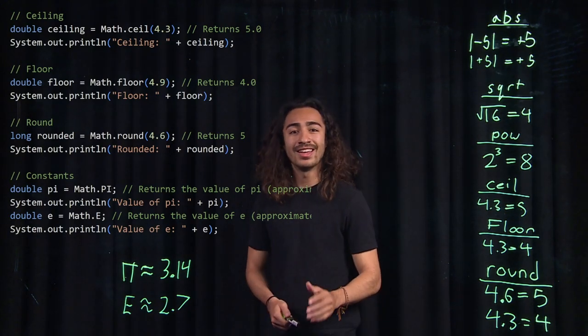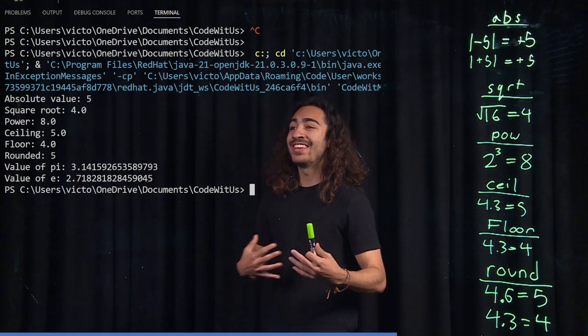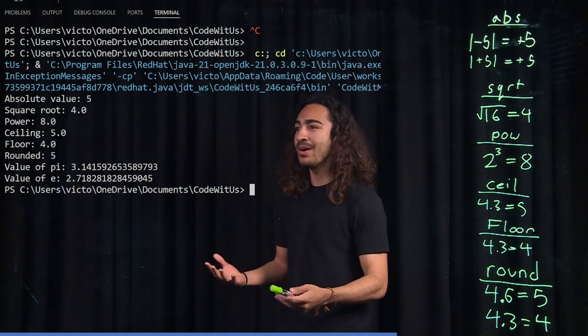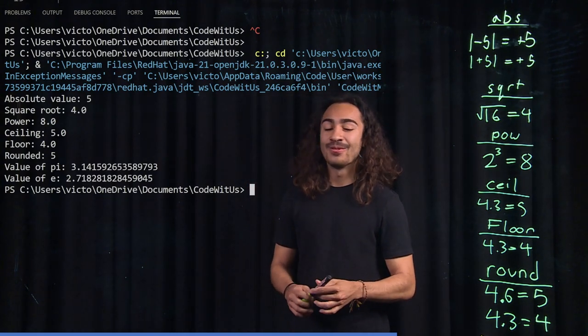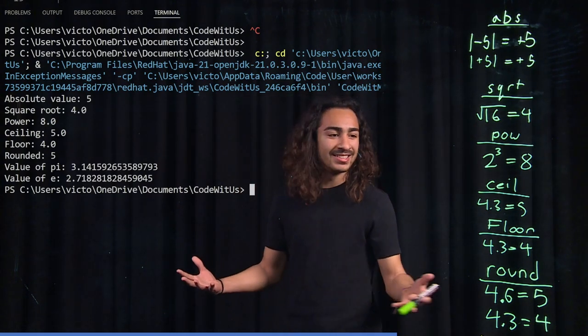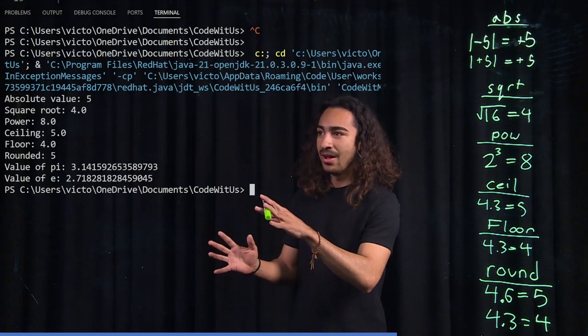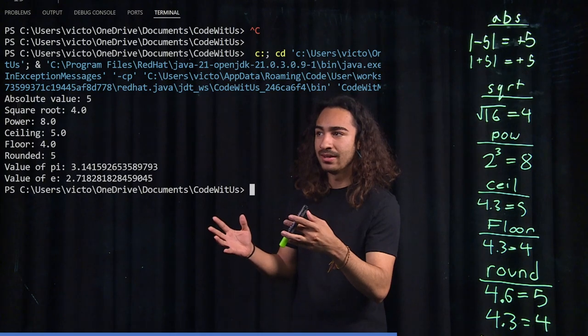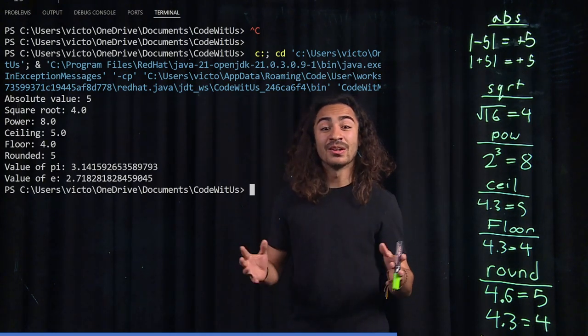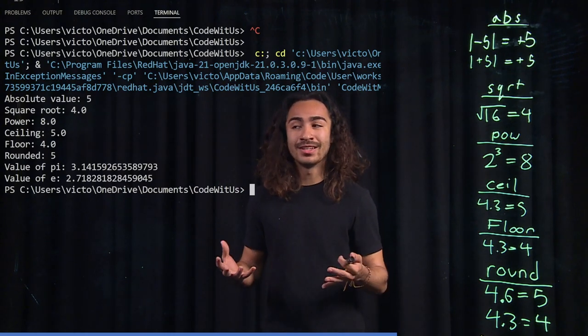So these are the values that we're expecting. Let's run the code and then let's check if our values are correct. All right. Absolute value, it gave us 5, square root 4, power 8, ceiling 5, floor 4, rounded 5. Exactly how we expected. And as you can see, all these values returned a decimal value except for absolute value. So you want to make sure that the functions you're using are returning the type that you want. So just be careful with that one.